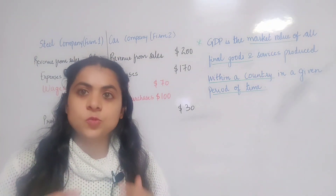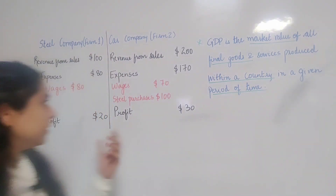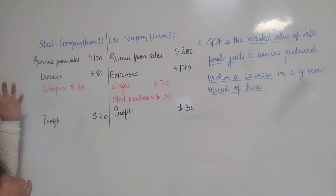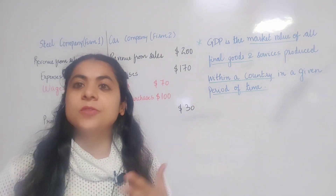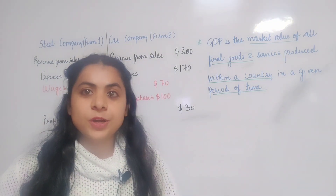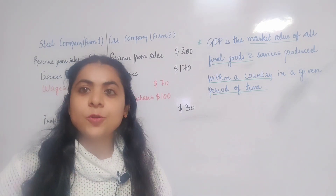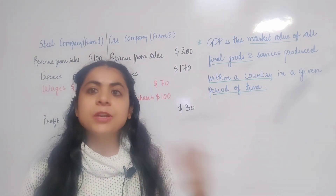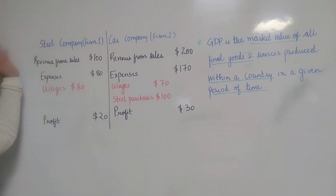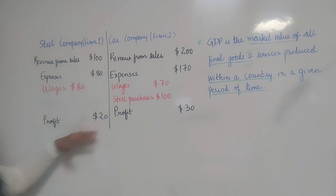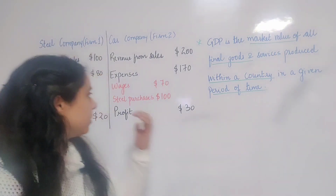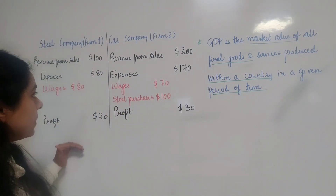Firm one uses machines and workers to produce steel and pays workers $80. In reality, not only machines and workers are required to produce steel but also iron ore, electricity, and so on — we have ignored these to keep the example simple. The revenue earned by the steel company is $100, and subtracting expenses, the total profit earned is $20.